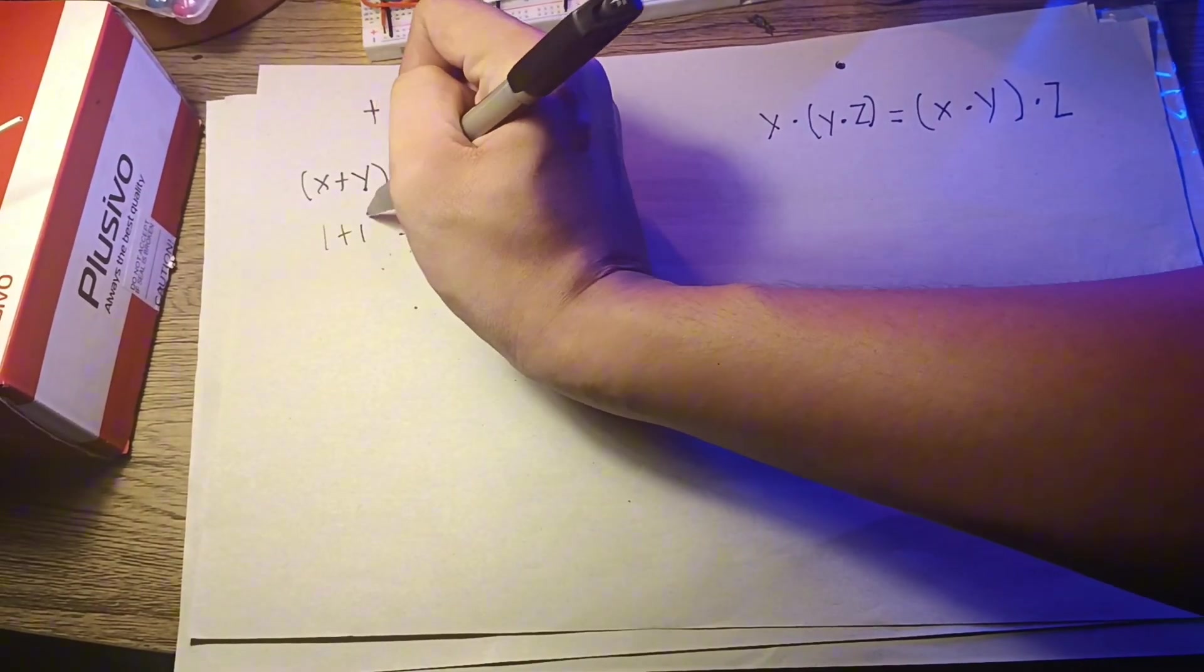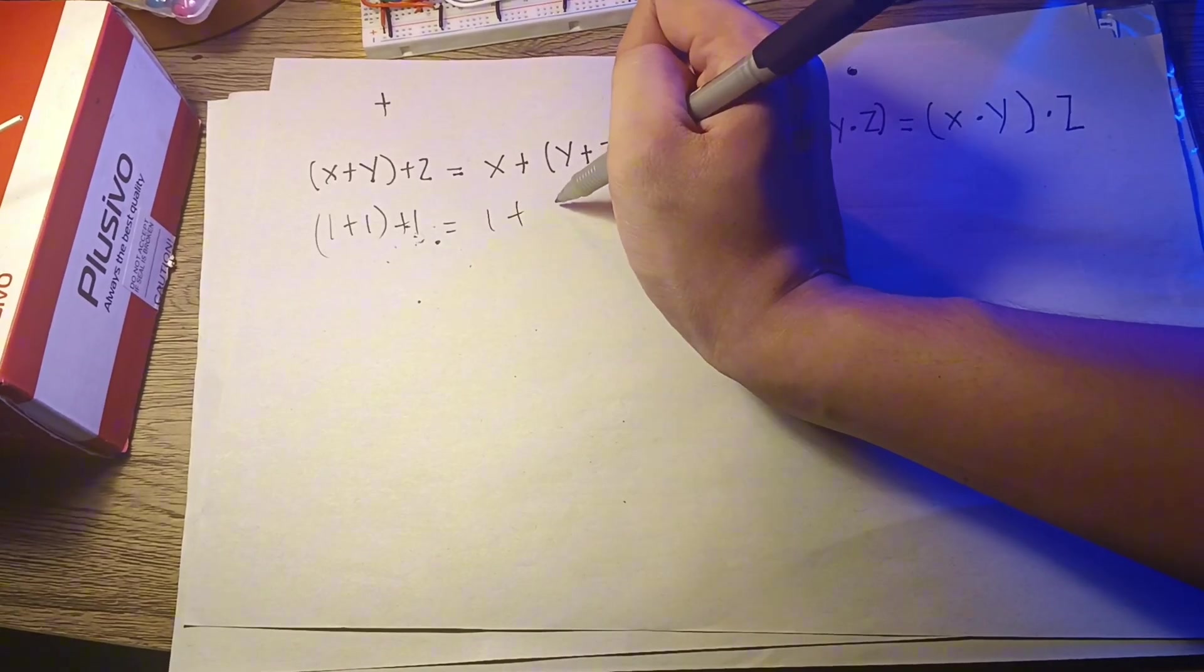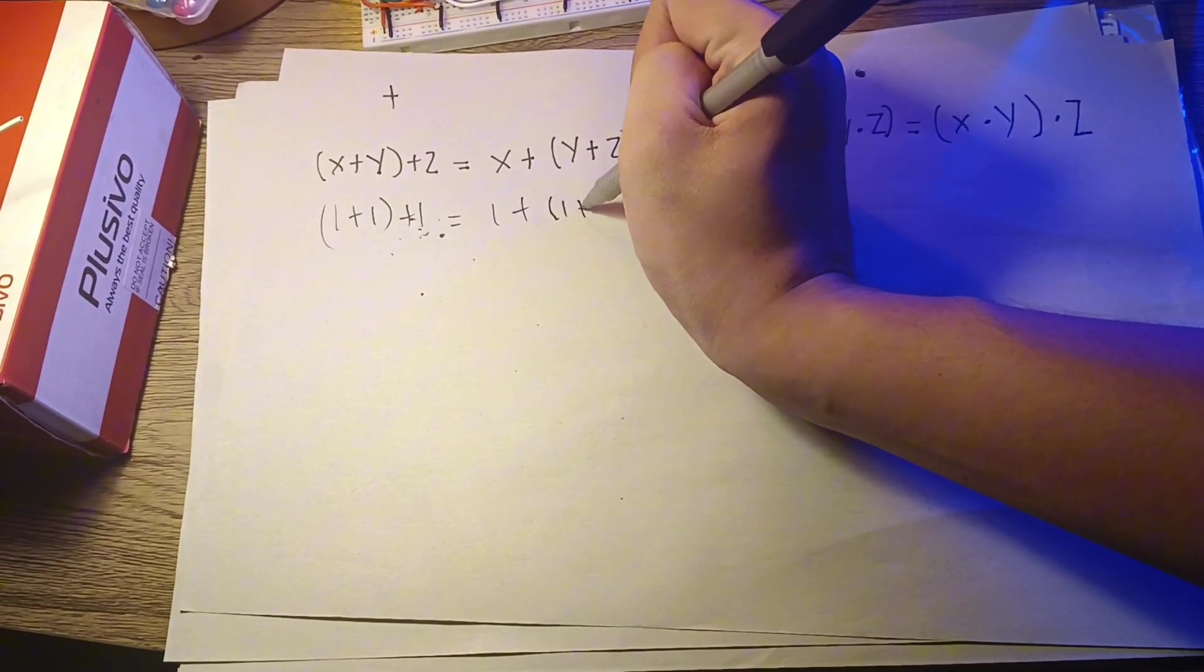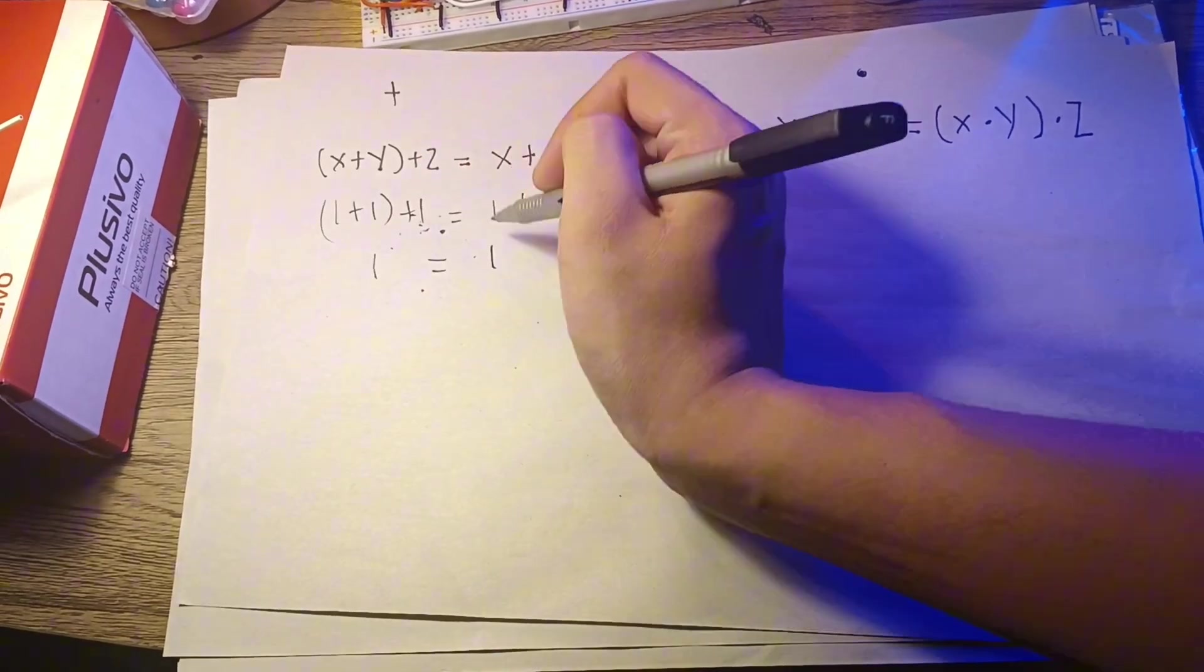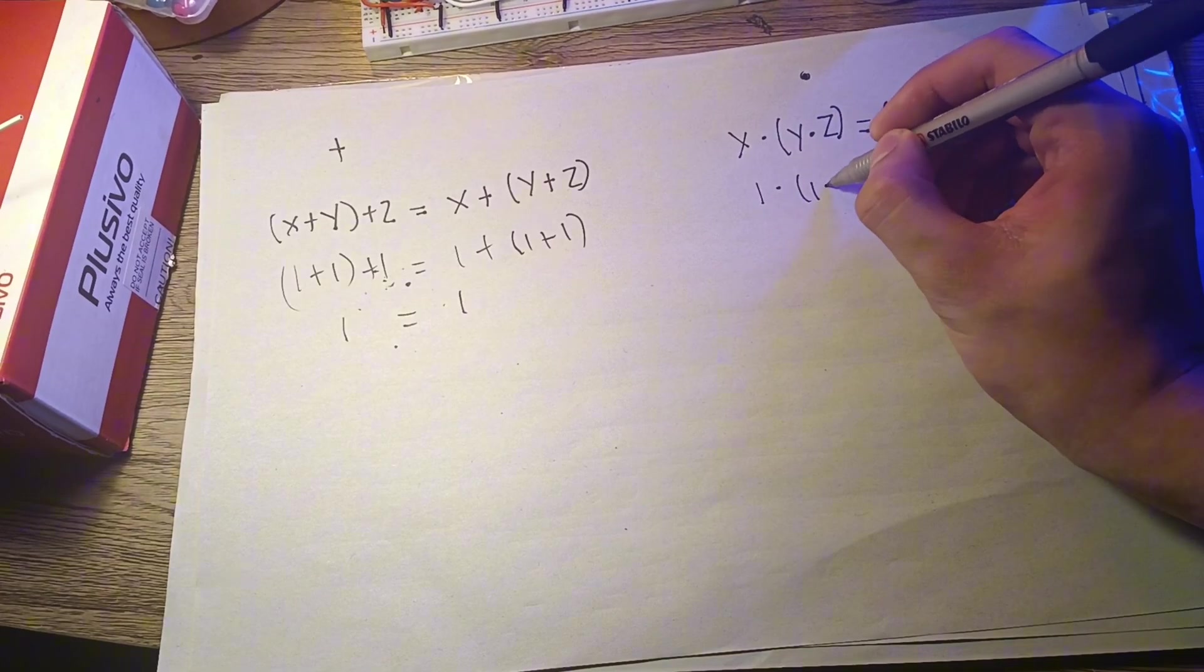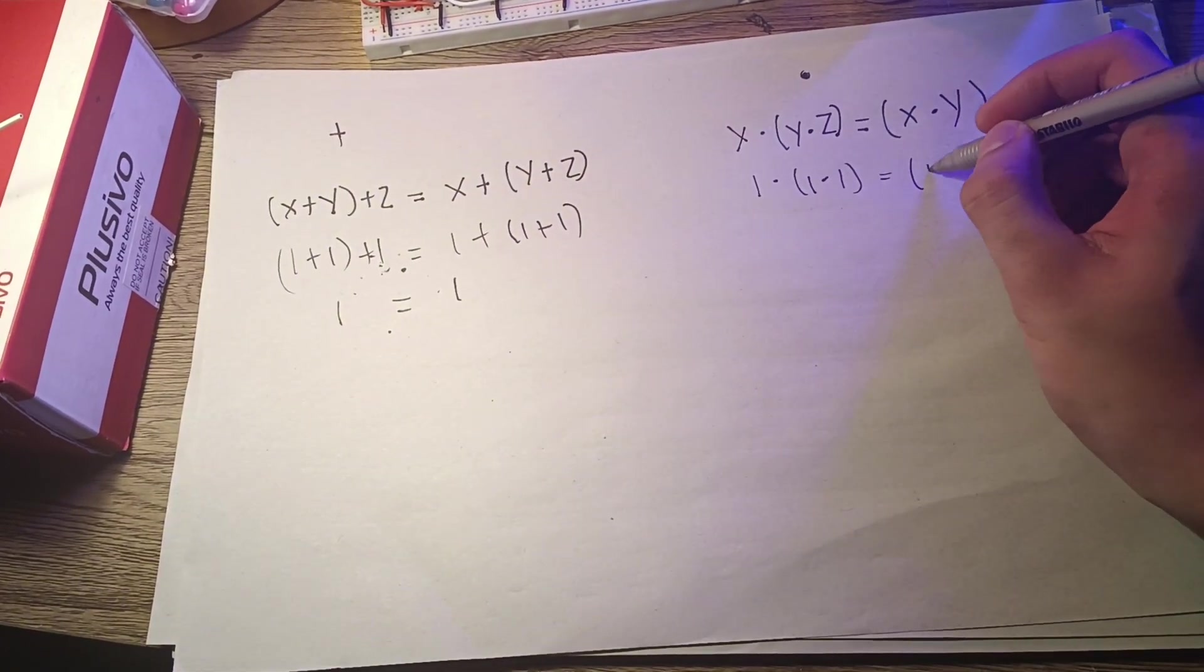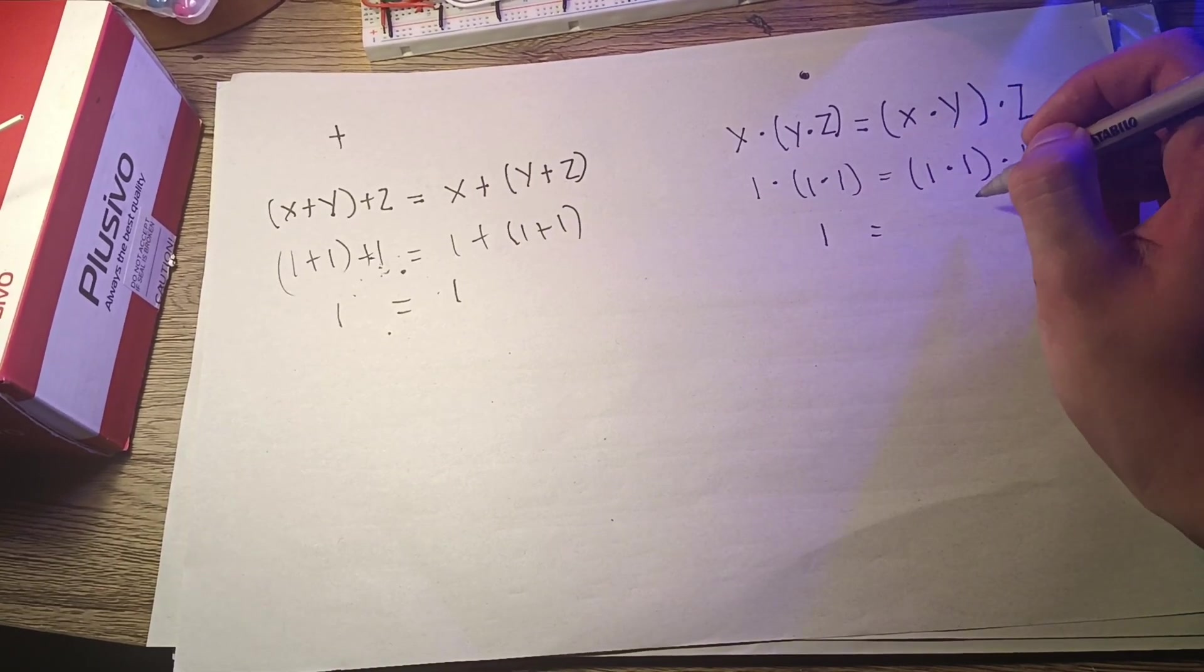Like 1 plus 1 plus 1 equals 1 plus 1 plus 1. So 1, 1, 1 equals 1, and this, like 1, 1, 1 equals 1, 1, 1, 1. So 1 equals 1.